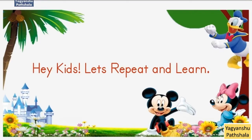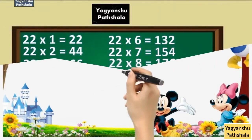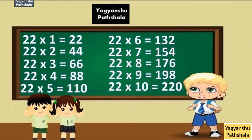Hey kids, let's repeat and learn. 22 1 Jaa 22. 22 2 Jaa 44. 22 3 Jaa 66. 22 4 Jaa 88. 22 5 Jaa 110. 22 6 Jaa 132. 22 7 Jaa 154. 22 8 Jaa 176. 22 9 Jaa 198. 22 10 Jaa 220.